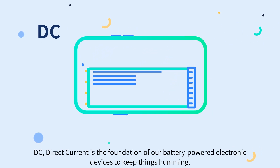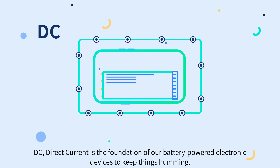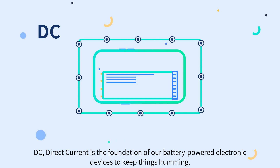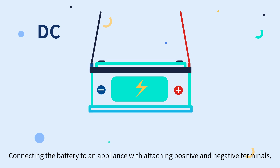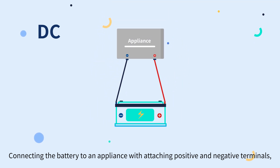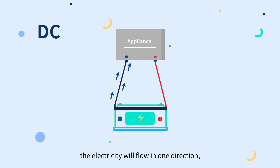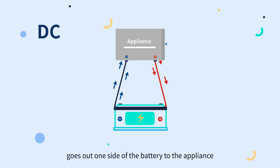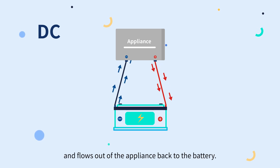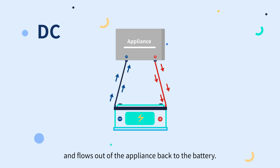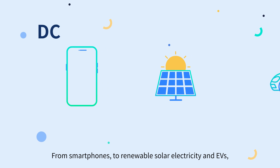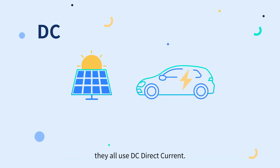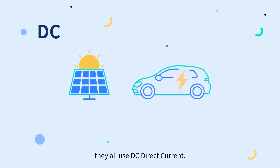DC direct current is the foundation of our battery-powered electronic devices. By connecting a battery to an appliance — attaching the positive and negative terminals — electricity flows in one direction: out one side of the battery to the appliance, then back to the battery. From smartphones to renewable solar electricity and EVs, they all use DC direct current.